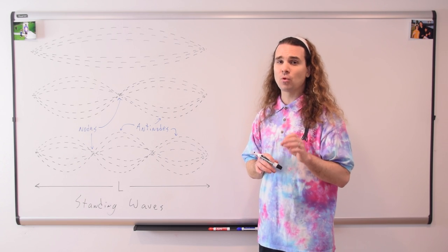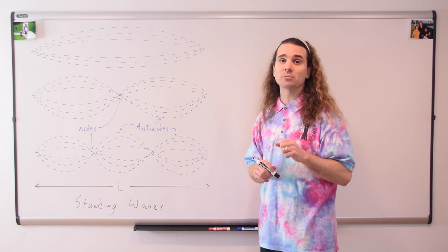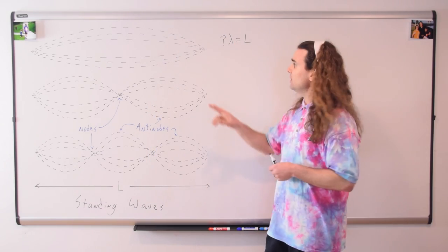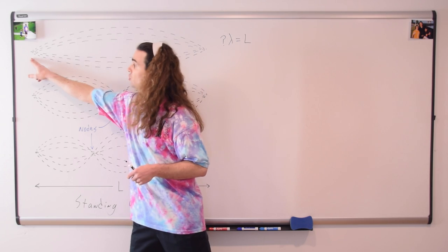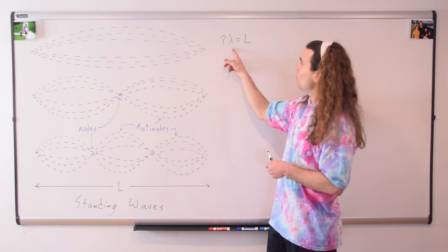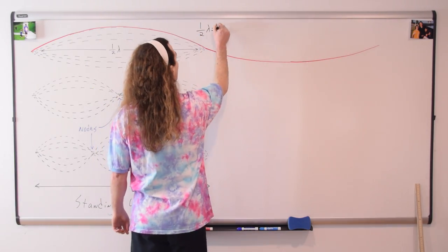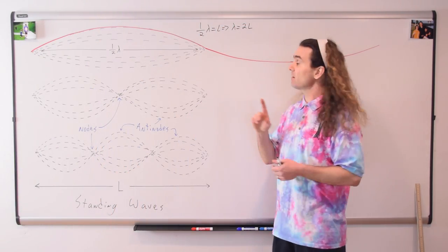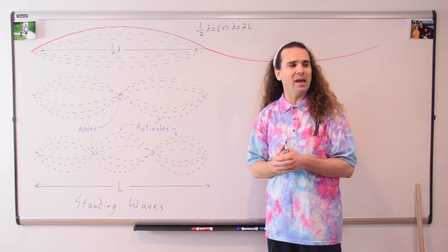Let's determine the wavelength of each standing wave pattern in terms of L. In the first standing wave pattern, which has one antinode and two nodes, there is only half a wavelength in the distance L. Therefore, the wavelength of the wave equals two times L, the length of the standing wave.